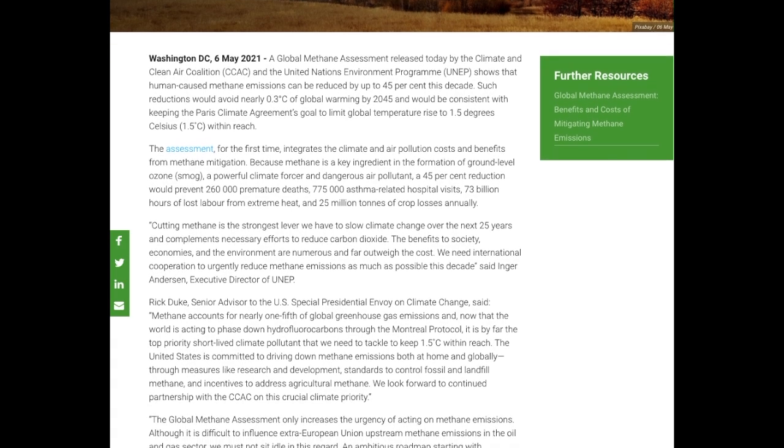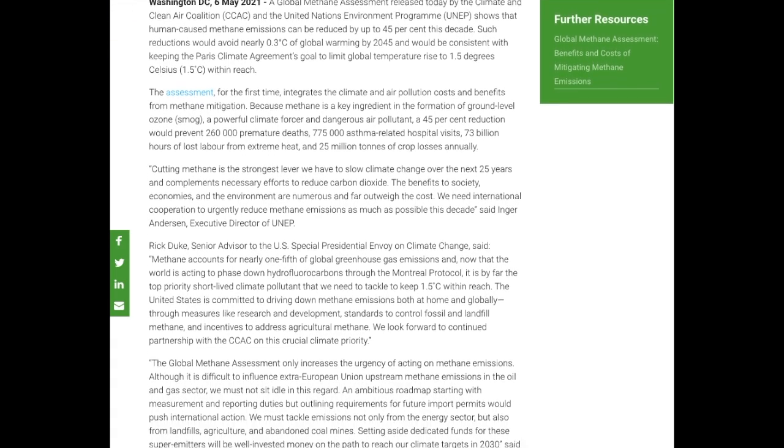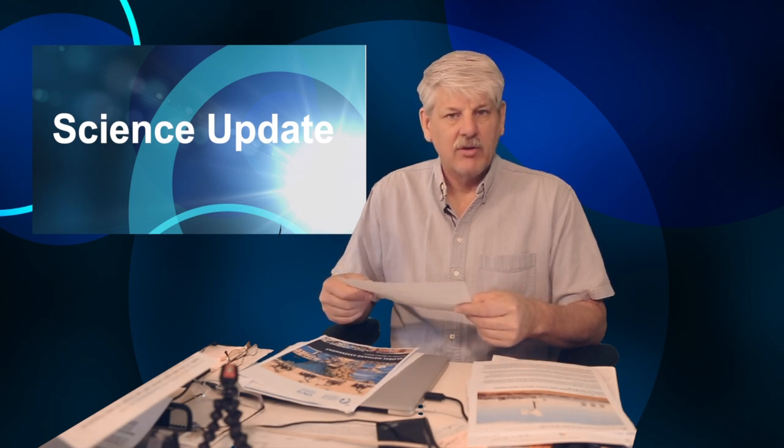From the report itself, the abstract for the report issued May 6th, 2021, along with these other two previous papers, May 6th, 2021. Global Methane Assessment, Benefits and Costs of Mitigating Methane Emissions. Right there in the top first line comes this one. The assessment highlights the critical role that cutting methane emissions plays in slowing the rate of global warming.